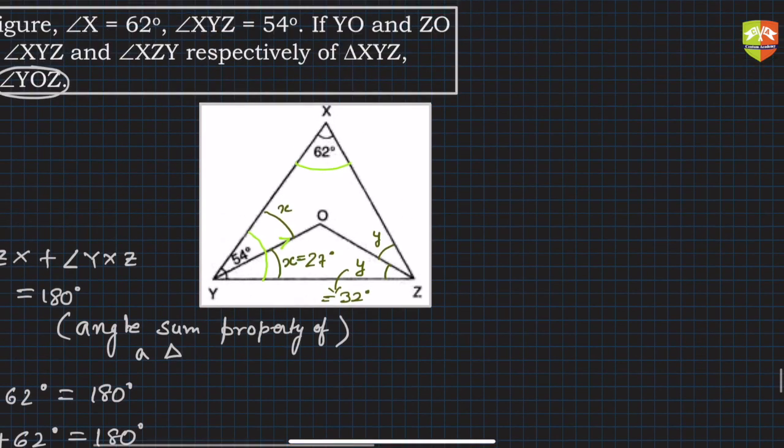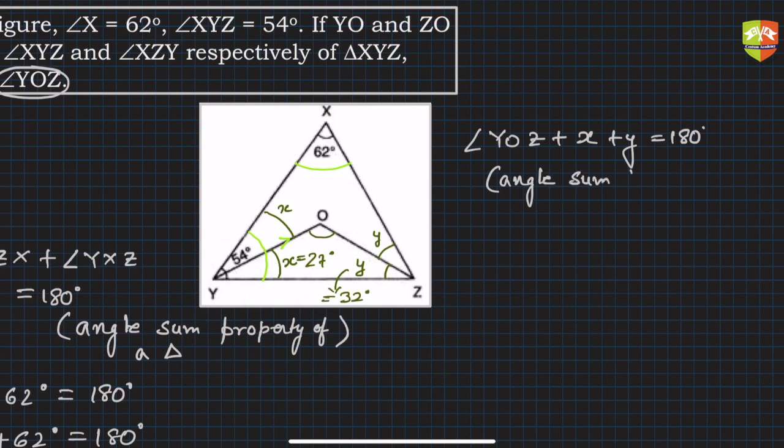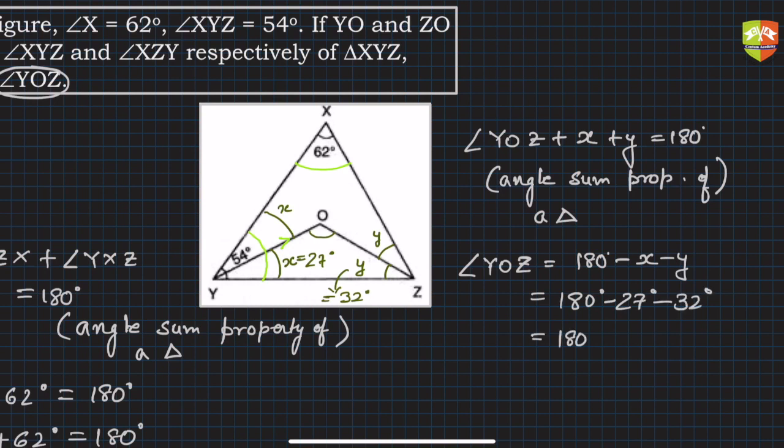Hence, let's find out what is left: angle YOZ. Clearly angle YOZ plus x plus y is 180 degrees, and again the reason is angle sum property of a triangle. So YOZ equals 180 degrees minus x minus y, which is 180 degrees minus 27 degrees minus 32 degrees.